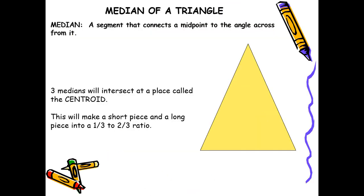Today we're going to look at what's known as a median. A median is a segment that connects a midpoint to the angle across from it. The midpoint is a point that cuts the side in half. So if I draw in my midpoint right about there, that means this side is equal to this side — they both have the same length. Now if I draw in my median, I take this point and draw down to the angle across. That is my median.